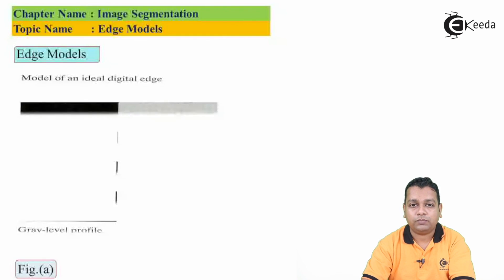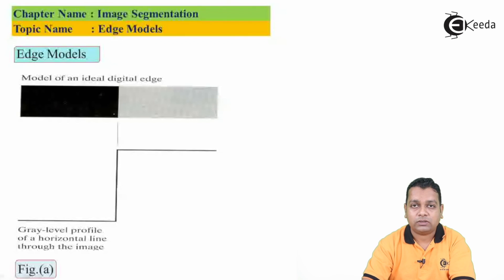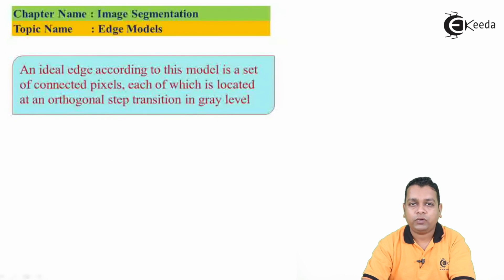Figure A represents a model of an ideal digital edge. Here we have only two logic levels — the lower one and the upper one. This is the gray level profile of a horizontal line through the image. Here we have the gray-shaded uniformity on one side and complete darkness representing black on the other side. An ideal edge according to this model is a set of connected pixels, each located at an orthogonal step transition in gray level.